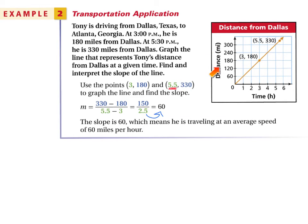Distance. Change in y divided by change in x. Miles divided by hours. That means he is going 60 miles per hour.